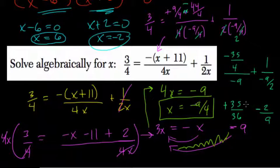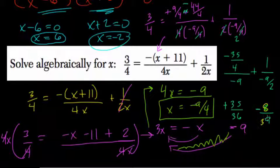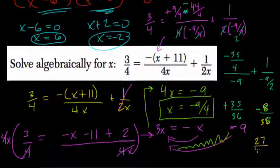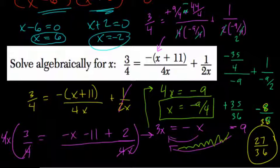So we have 35, 36ths minus 2 9ths. We can scale up 2 9ths by 4 to get 8 36ths. So take 8 from 35, what do we get? 27 36ths, and that is 3 4ths. So we got the right answer, even though it took us a long time to check it.